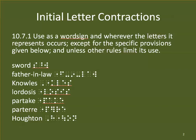Initial letter contractions are what UEB calls the .5, .45, and .456 contractions that we had before. You'll notice that all of those dot configurations are prefixes — they are dots only on the right-hand part of the cell. So we've been using prefixes just like we've been using modes all along. We just didn't necessarily call them those things, and UEB is much more formal about it.